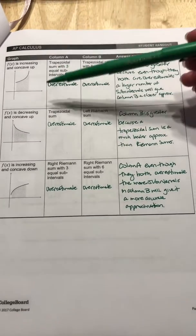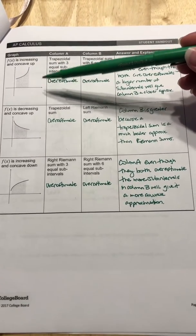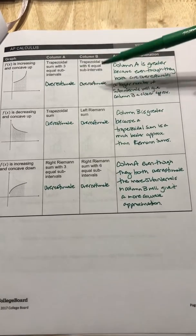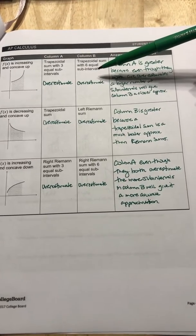So if we go on to the next page, we have that f of x is increasing and concave up. So it says trapezoid sum with three equal sub intervals and then trapezoid sum with six equal sub intervals.